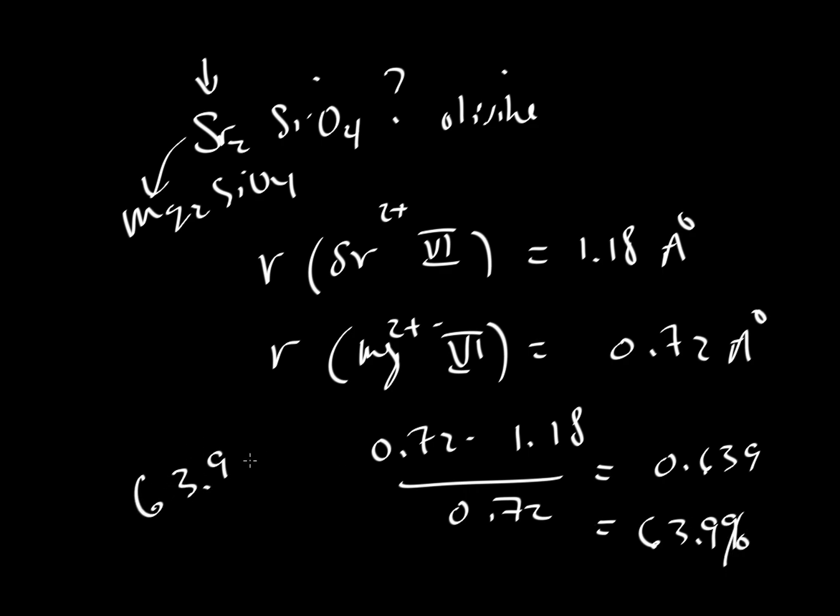63.9% is greater than that critical value of 30%. So we would estimate that there is going to be no solid solution between the strontium component and magnesium components. The olivine crystals that you might pick up from a lava flow somewhere might have lots of iron, at least iron 2+, but they shouldn't have any strontium. Or if they do, it's just going to be in very trace amounts.